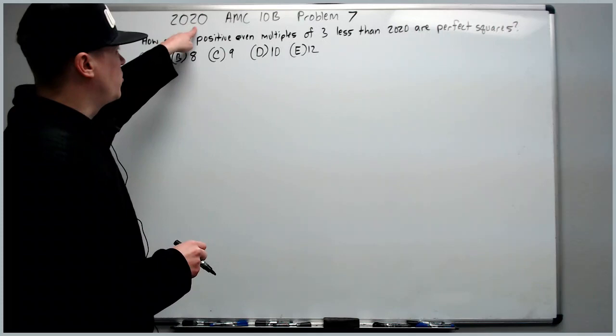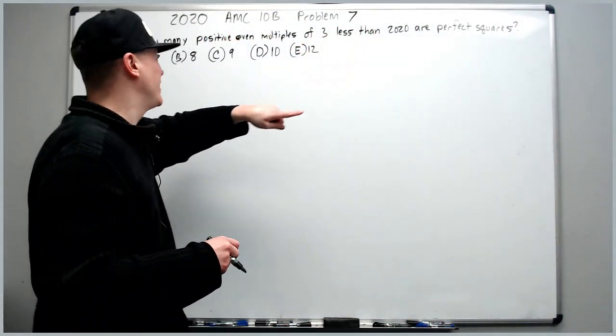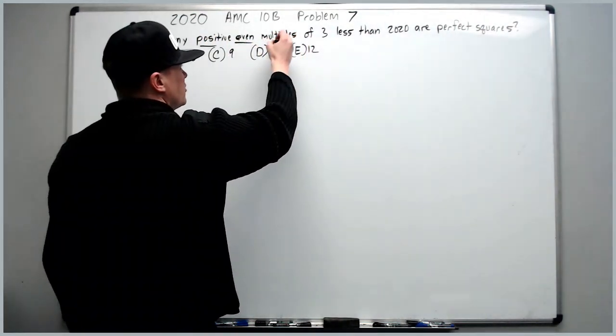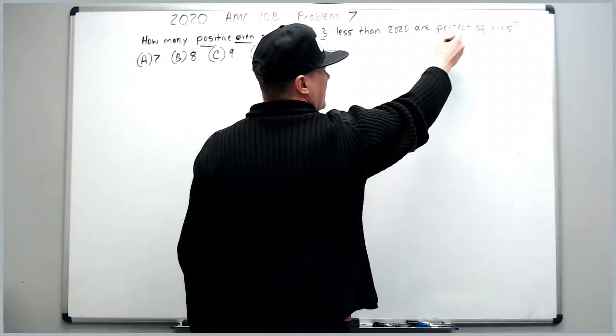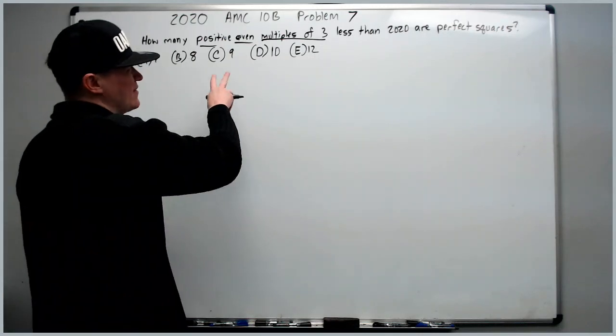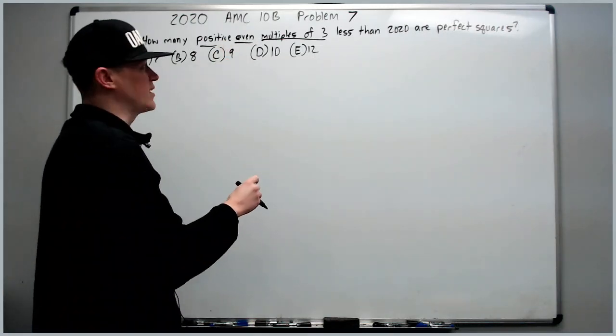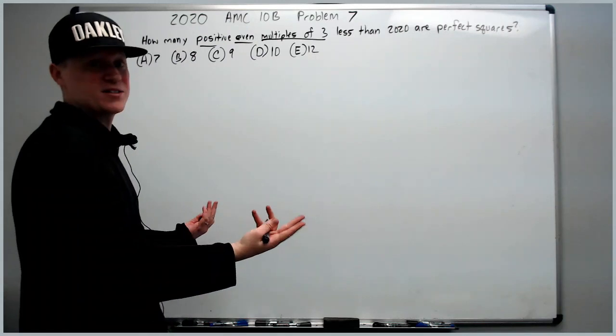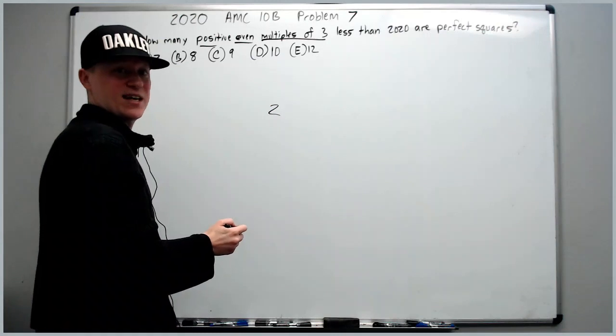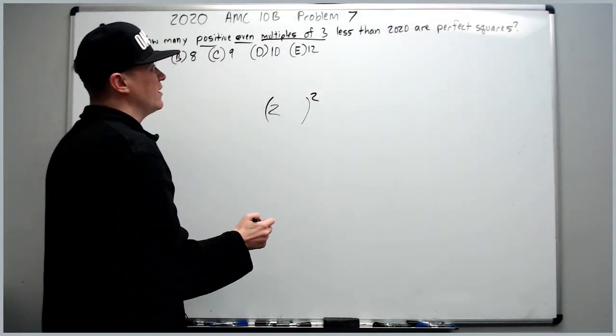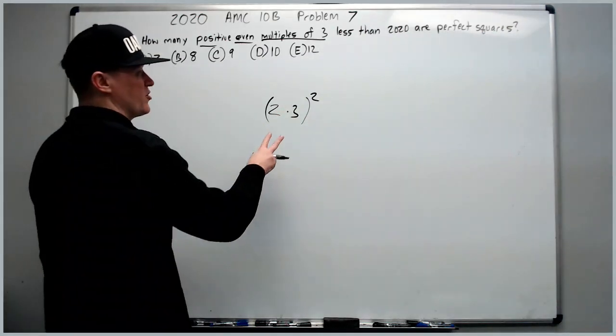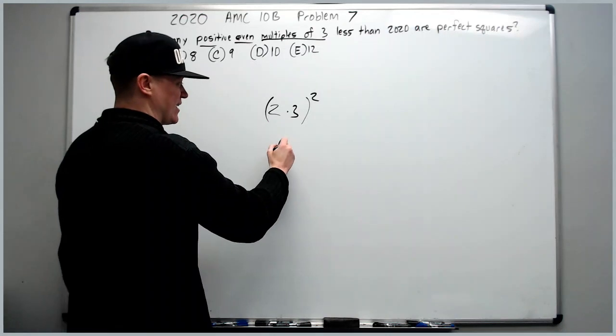Continuing on with the 2020 10B, problem number 7. How many positive, even multiples of three less than 2020 are perfect squares? So we need a lot of things here. In order to have an even perfect square, it's going to have to have a two in it and then squared. In order to be a multiple of three, it's going to have to have a three in it and then squared. So they're all going to have to have at least 6 squared.